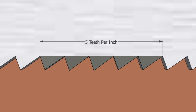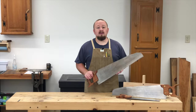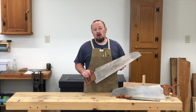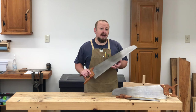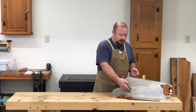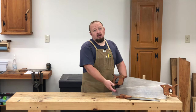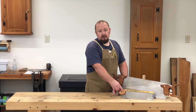To measure the spacing in points per inch, or PPI, we measure from point to point and count the number of individual points in the inch, including the starting and ending points. In this example, there are six points per inch. As the illustration shows, there will always be one more point per inch than there are teeth per inch. For example, this saw has four and a half teeth per inch, so it has five and a half points per inch. This cross cut saw has nine teeth per inch or ten points per inch, and this sash saw has twelve teeth per inch or thirteen points per inch.